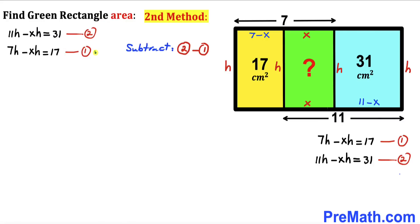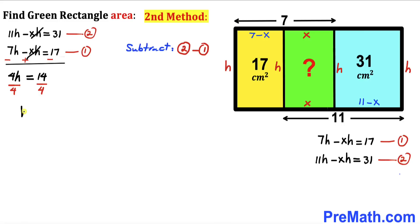We now have two equations. Subtracting equation 1 from equation 2: 11h − xh − (7h − xh) = 31 − 17. The xh terms cancel, leaving 4h = 14. Dividing both sides by 4, h = 7/2. So the height h is 7/2 across the board.